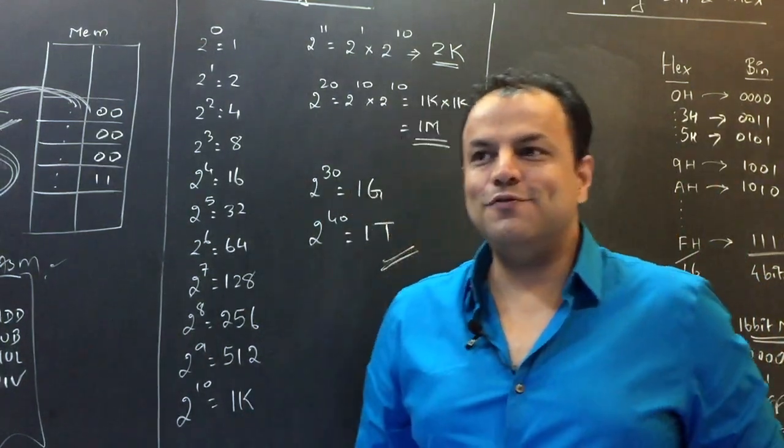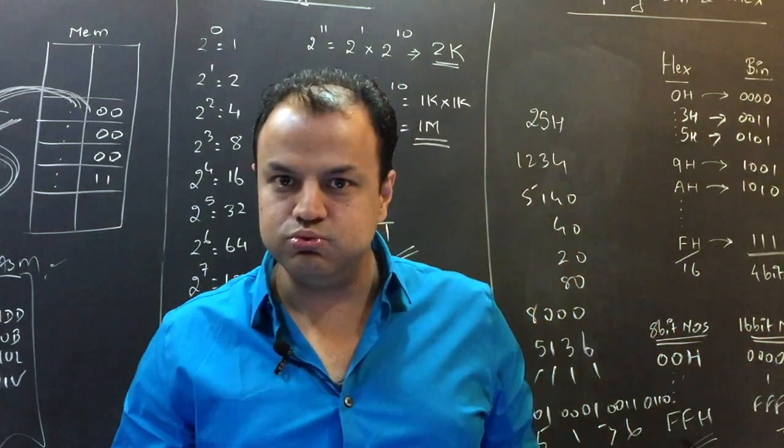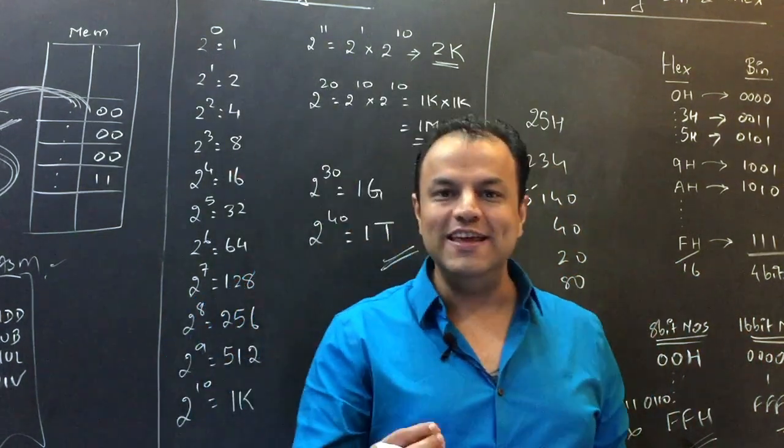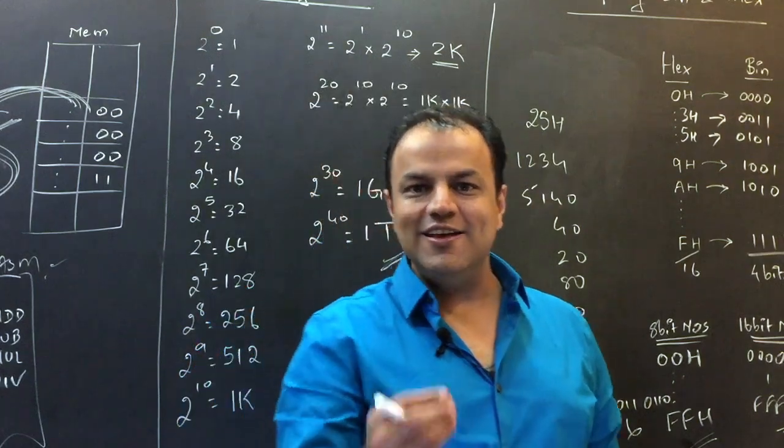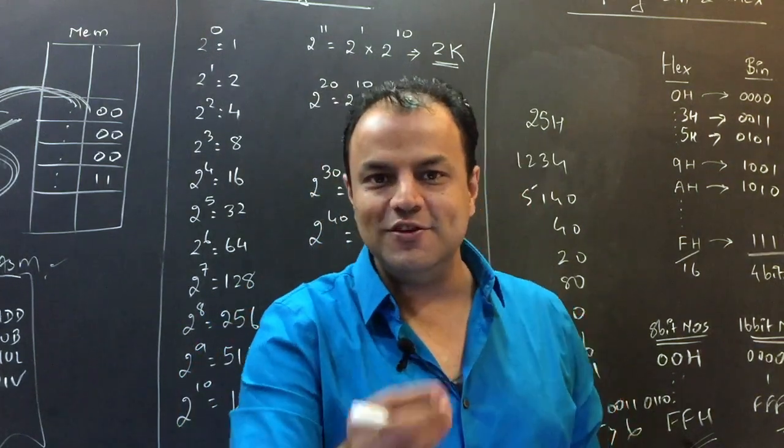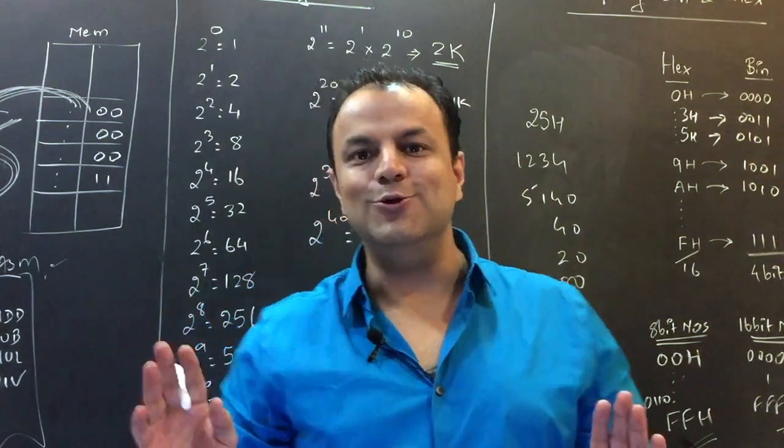When I say I have 4 GB RAM, what does that mean? Four giga. Four is two raised to two. Giga is two raised to 30. That means it is two raised to 32.